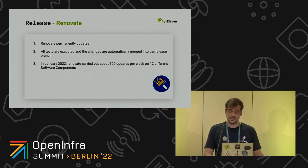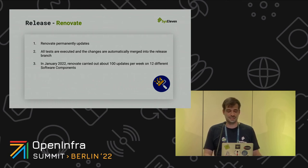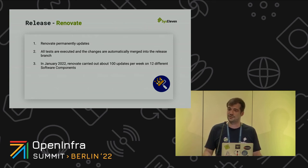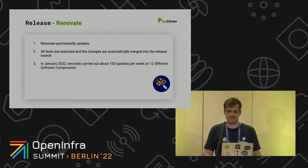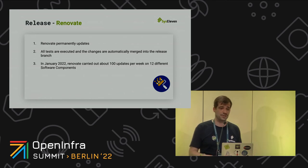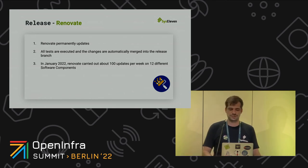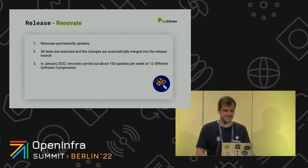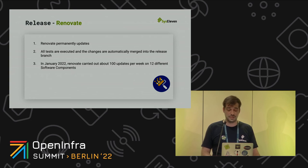There's one tool I want to highly recommend: Renovate. The Renovate bot automatically checks for every version update described in your CI/CD pipeline and your Git repository. We had over 100 updates per week for those 12 building blocks in January alone.